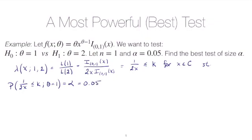And if right now things are in terms of a function of x, we might want to get it so that it's just in terms of x because we know the distribution of x under the null. So we can rearrange a bit and get this to be the probability that x is greater than or equal to 1 over 2k under the null hypothesis that theta is equal to 1.